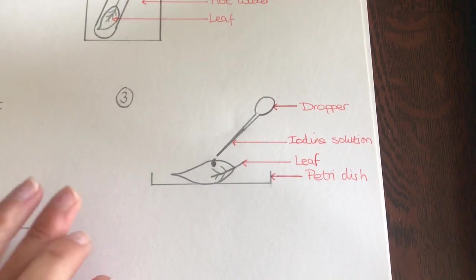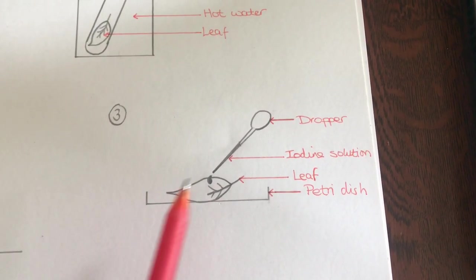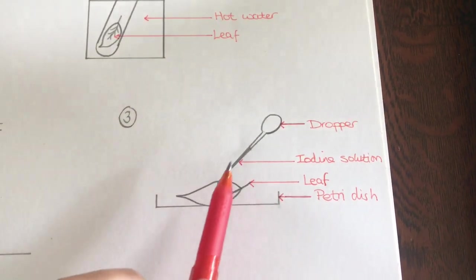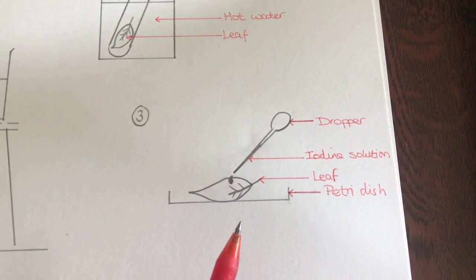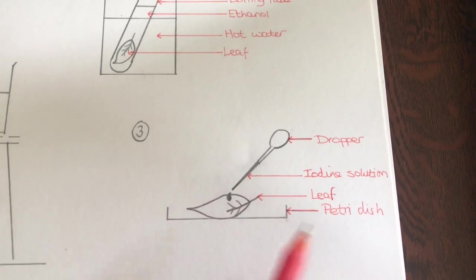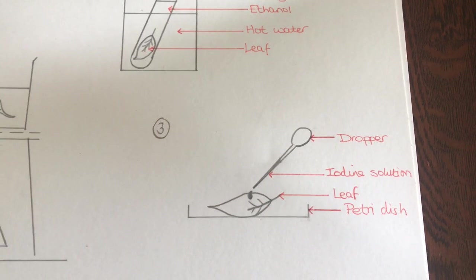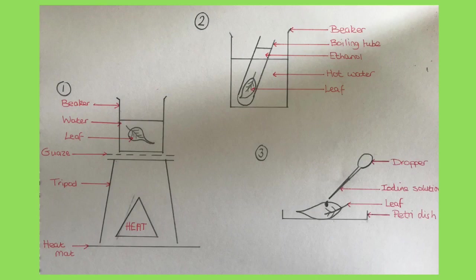Last of all, the third diagram: we've got our petri dish with the leaf in it. We've got our dropper with the end coloured in and a drop shown to indicate iodine solution. All labels are added really neatly. Pause here and copy your three diagrams either into the box or onto a piece of A4 paper.